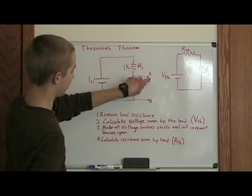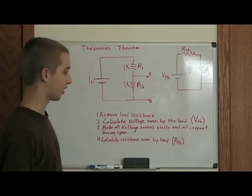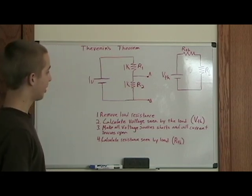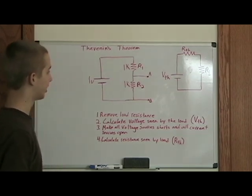As you can see, we're left with the two terminals A and B. So the second step is to calculate the voltage seen by the load. This is pretty easy in this circuit because you can see R1 and R2 just form a simple voltage divider.